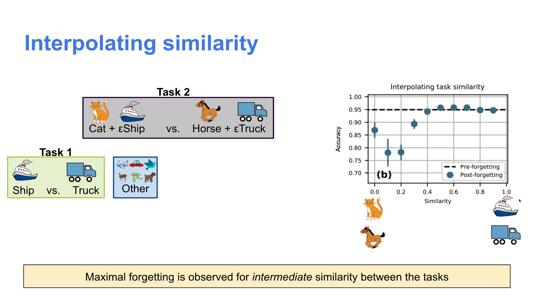Now let's test the other prediction from our frozen feature model, namely that intermediate similarity between tasks causes maximal forgetting. The setup is the same as before. We use this other category. But now we can vary what task two is by varying this parameter that I've called epsilon. Essentially what this parameter does is it linearly interpolates task two between the cat-horse task and the ship-truck task.